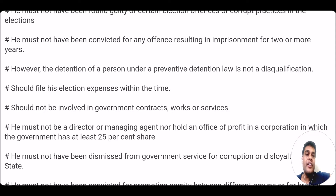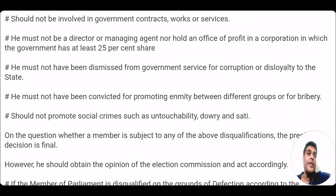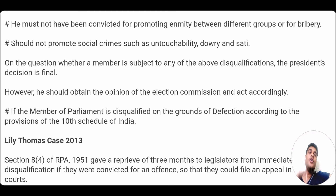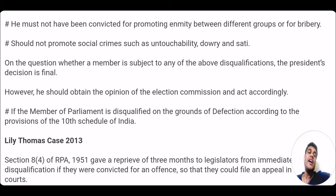He should not be a director or managing agent in any corporation in which the government has at least 25% ownership share. He should not be dismissed from government service for corruption or disloyalty to the state. He should not be convicted for promoting enmity between different groups — communal, religious, or caste groups. He should not be charged for bribery or promote social crimes like dowry, sati, or untouchability. If a member of parliament is subject to any of these disqualifications under the RPA Act 1951, the decision of the President will be final, but the President should act after consulting the opinion of the Election Commission.